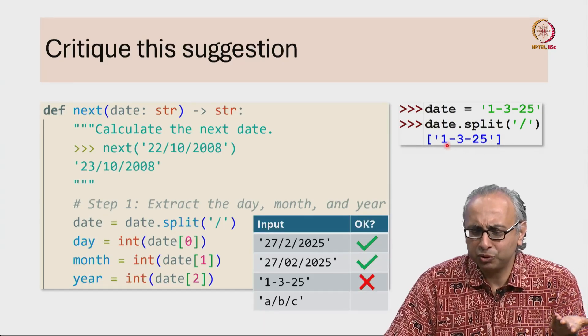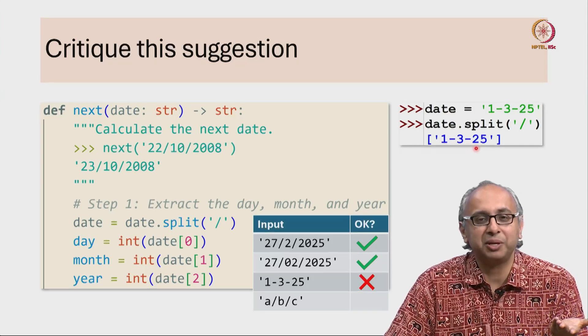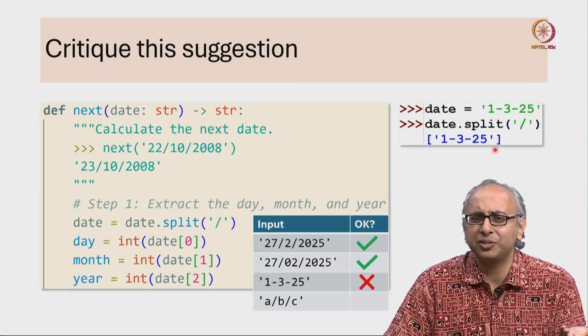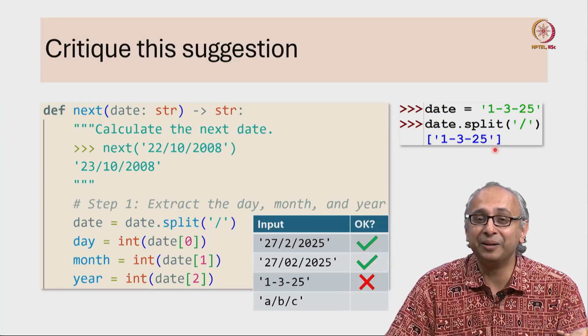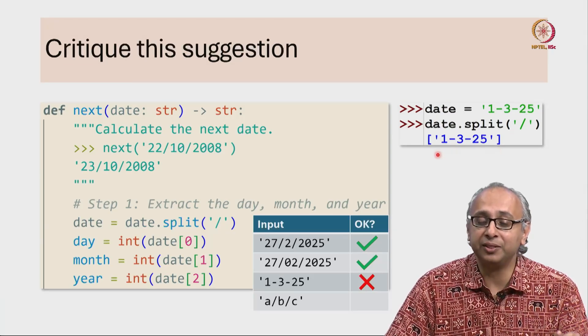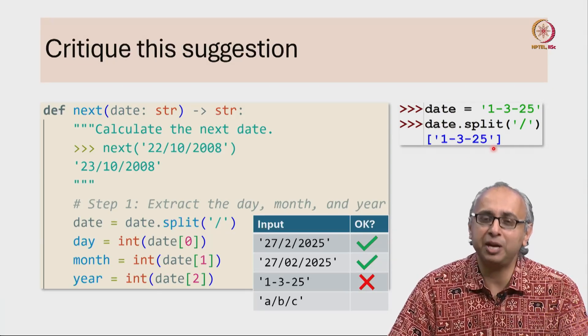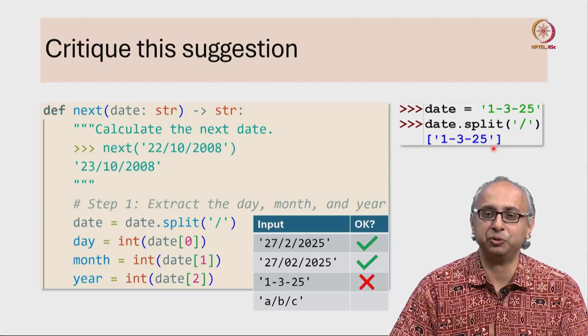You might have thought it should work. Well, shouldn't it produce 1-3-25, isn't that an integer? Even if it was, that would certainly not be the intended value. But actually, this doesn't work. Once again, you should try this out and observe the error you get.